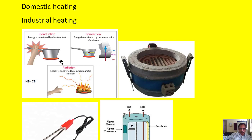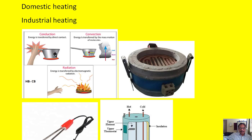In the conduction method, here is a rod held by a hand, and the rod is directly connected to the heat source. The rod is initially at room temperature, but once placed in contact with the heat source — like an oven — heat directly enters the rod and makes its temperature rise. This is called the conduction method.